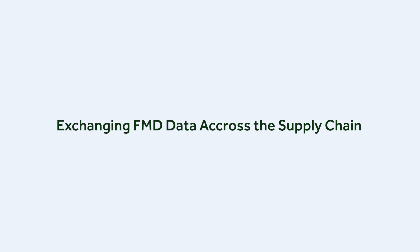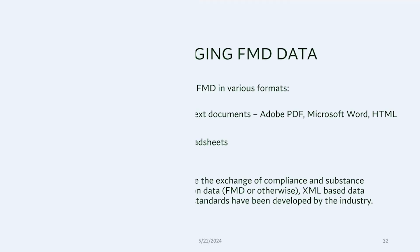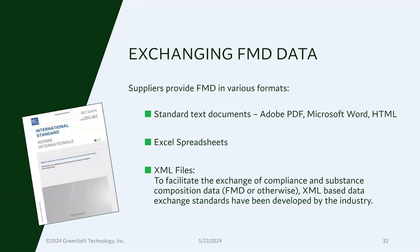When we're exchanging data in the supply chain, there is no standard format for exchanging this information. There is no one form. When we're talking about conflict minerals, there's a CMRT form — everybody has the same form, they pass those things up and down the supply chain, and it's always the same. But with full material disclosure, it's not. Sometimes they give you an Adobe PDF, sometimes it's a Microsoft Word document, or an Excel spreadsheet, or HTML.